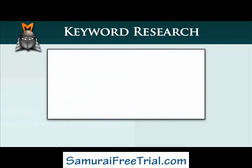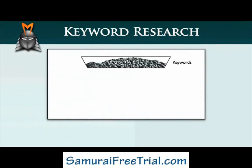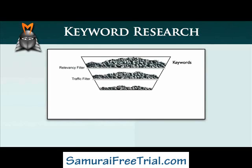Finding the best keywords to target in your business involves a process of filtering. We start with a large number of keywords and initially we eliminate the keywords that are clearly not relevant to our online business. Then we apply a PBR relevancy filter to remove any misleading keywords. Next, we apply a traffic filter to filter out keywords that do not have sufficient levels of traffic. Then we analyse the amount and strength of the competition to filter out keywords that are too competitive. Finally, we apply a commerciality filter to eliminate keywords that have little or no commercial value.